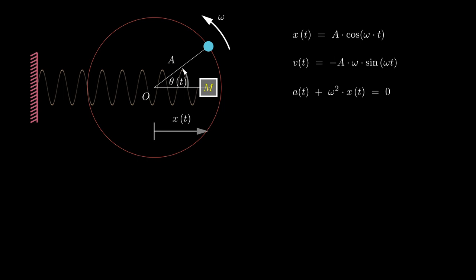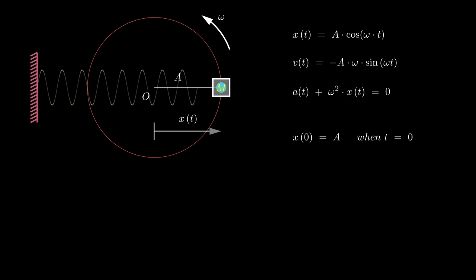In our analysis, we assumed that the displacement of the mass is at its extreme right when time is zero. However, this assumption may not always hold true — at time zero, the displacement could be at a different point. We can express the displacement using the expression x(t) = A cos(omega t + phi), where phi is a constant representing the initial position of the spring-mass system. This constant phi is commonly known as the phase angle or phase constant, and remains unchanged with time.